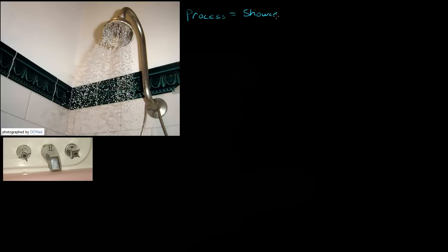Now what are we wanting to really control? Well, if you're me, you want the temperature to be constant. So we're wanting to control the temperature — the temperature is our control variable. Usually you want the temperature to be some precise value, so we have some set point that we want the temperature to be at.